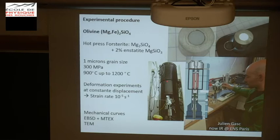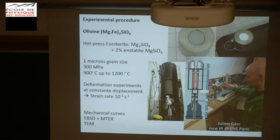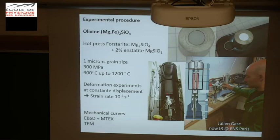This is the hot-pressed vessel we are using — the outside part and the inside part — and we place our little samples right in the center. The sample is basically one centimeter in size and seven to eight millimeters in diameter. It's a very nice apparatus for deformation in almost geological conditions, because we have an internal furnace as well as an internal load cell, which reduces thermal gradients as well as friction. And the most important parameter is Julian Gask, who did his postdoc with me in Montpellier, and he's currently setting up one of the experiments.